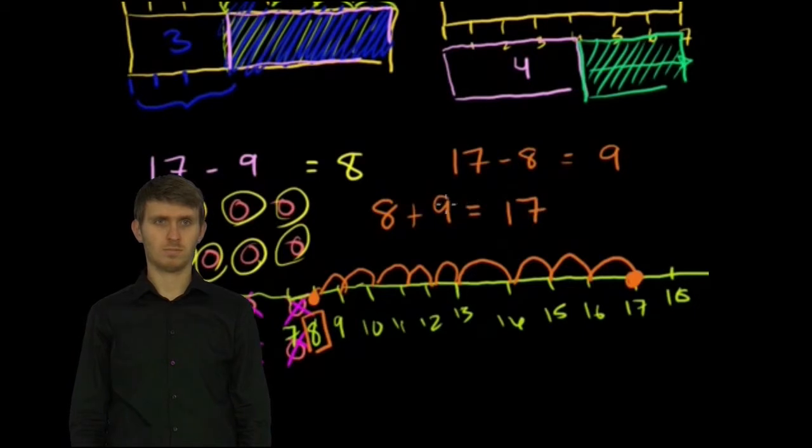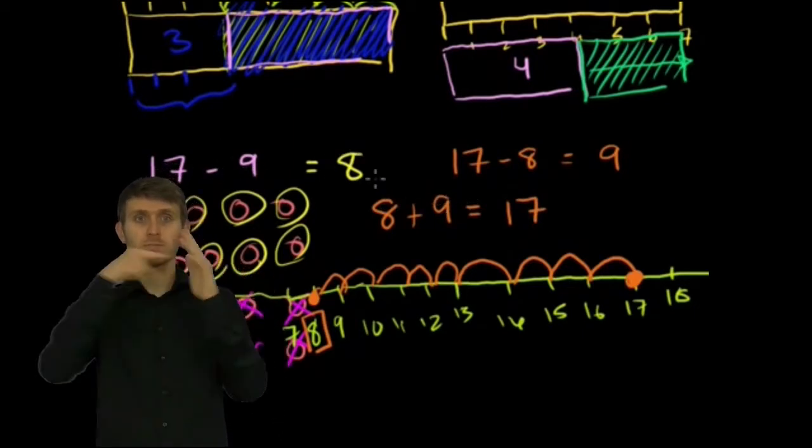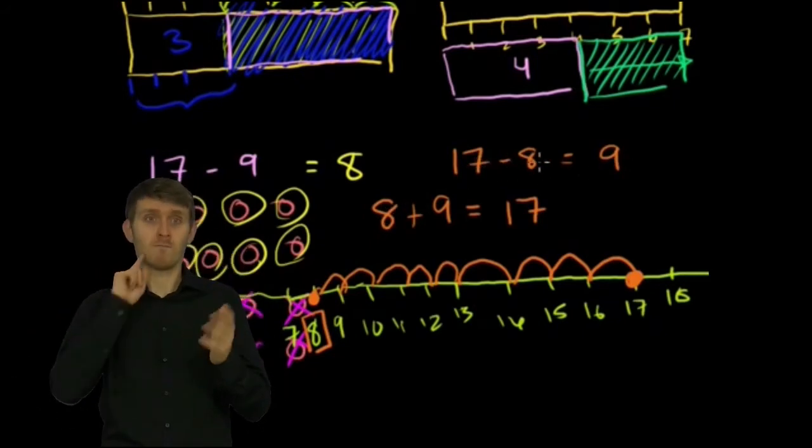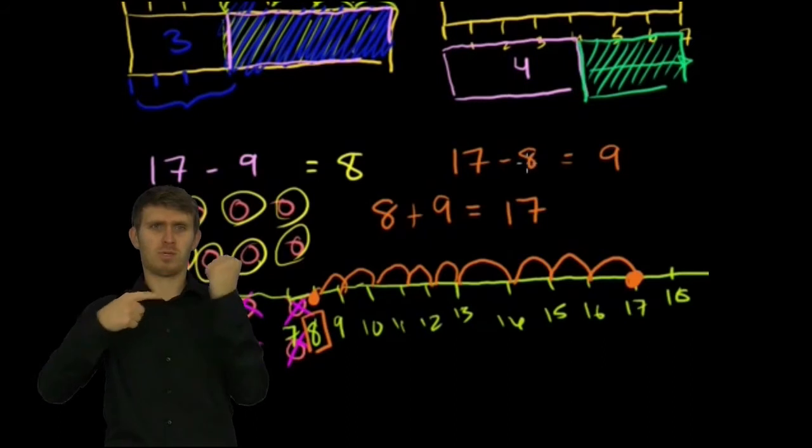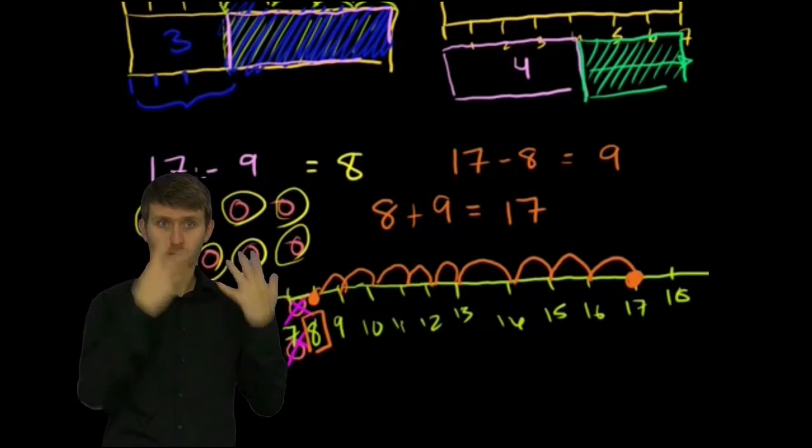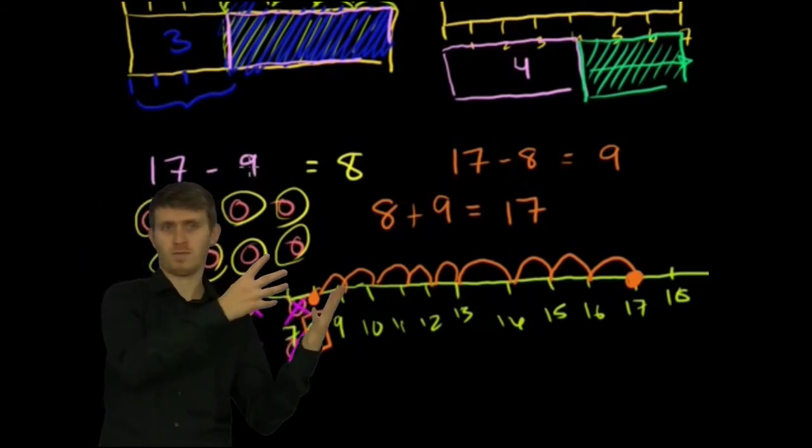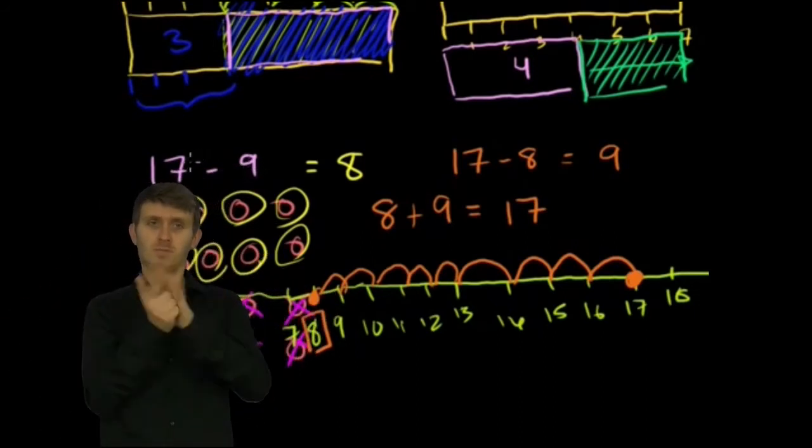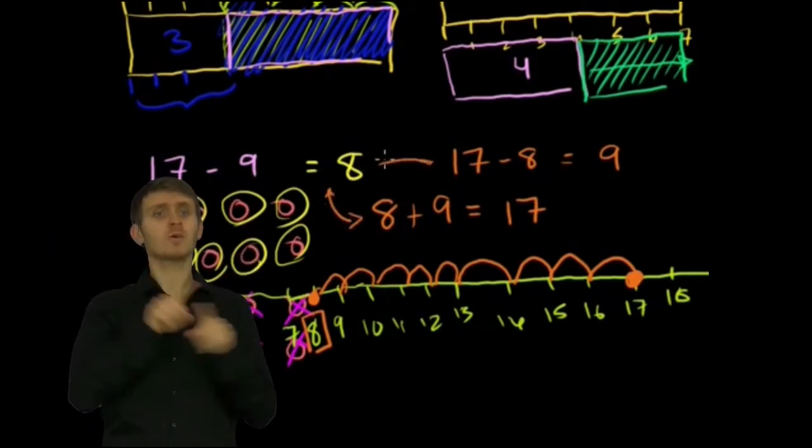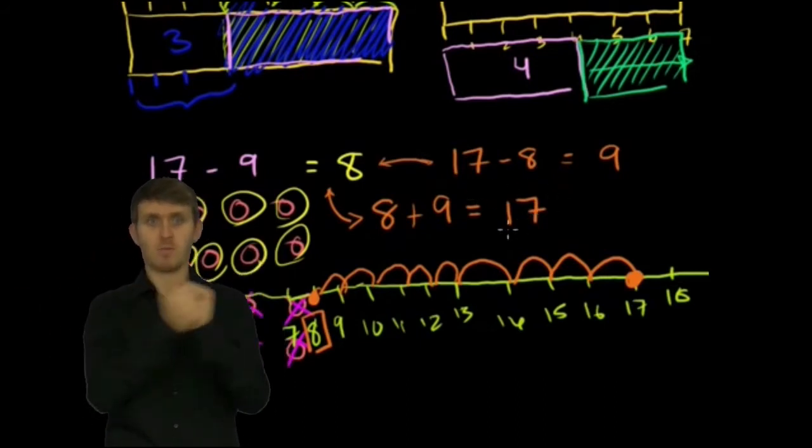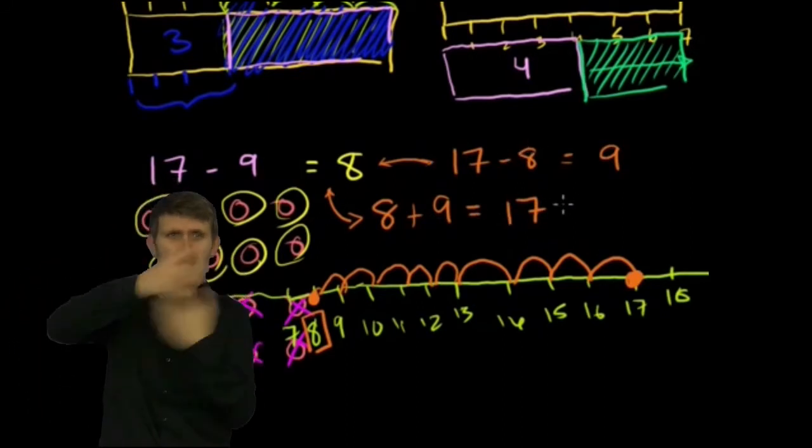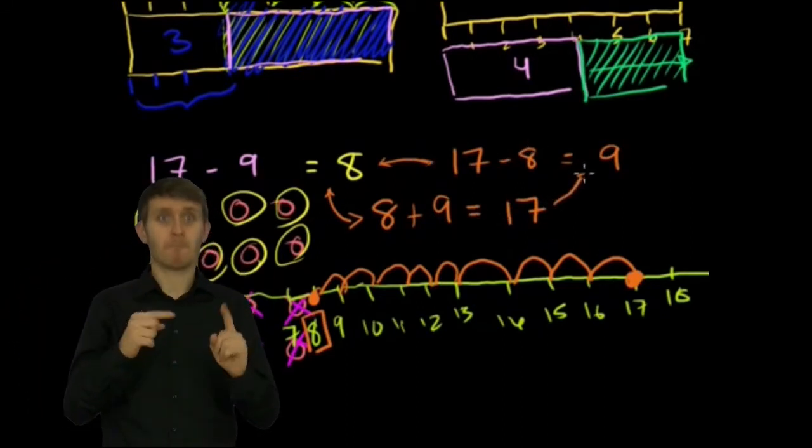And now why does all of this make sense? Because 8 plus 9 is equal to 17. So 17 minus 9 is 8, or 17 minus 8 is 9. When I say 17 minus 8, I'm essentially saying that is equal to some number that if I were to add to 8 will equal 17. Well, that's 9. So all of these statements are kind of saying the same thing, that 8 plus 9 are 17, or the difference between 17 and 9 is 8, or the difference between 17 and 8 is 9. Hopefully I'm not confusing you.